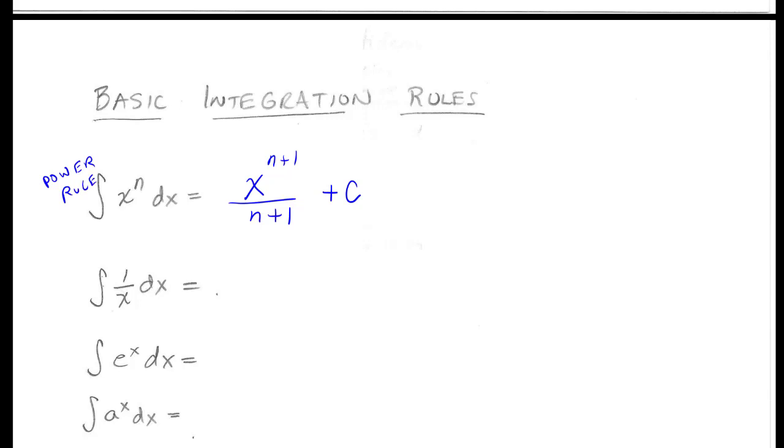Now see why this makes sense. This makes sense because if I have x to the n plus 1 over n plus 1 and I took the derivative of that, well that would mean the n plus 1 would come down, I would still have n plus 1 in the denominator. Then I'd have x and I'd subtract 1 from the exponent. So doing the derivative, that cancels, that cancels, that cancels and I get x to the n. And that's why it's working.